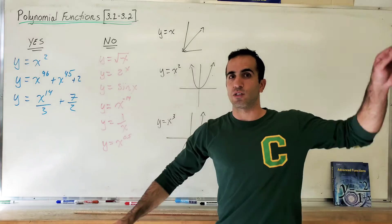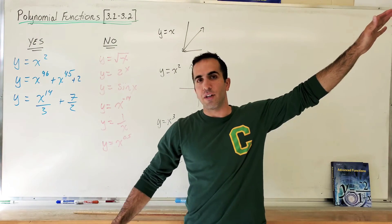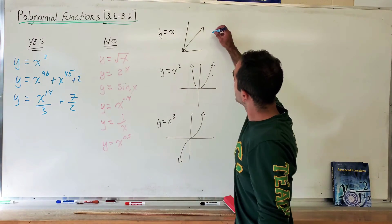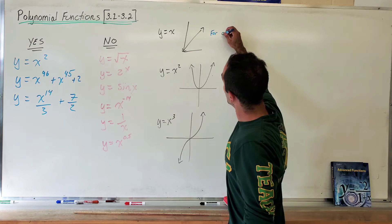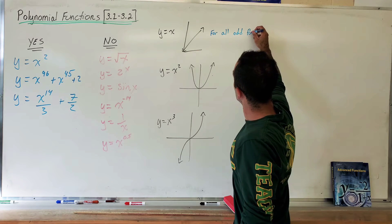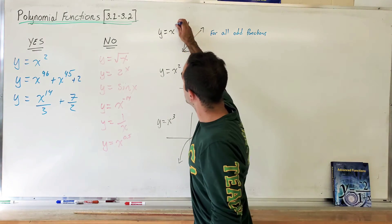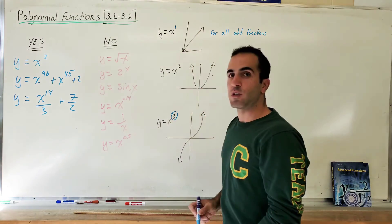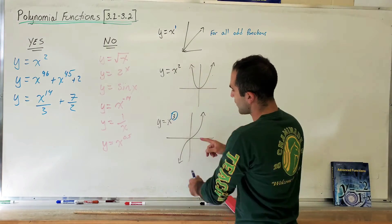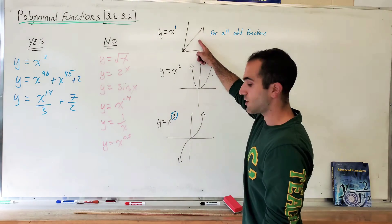So y equals x looks like this. Look at the end behavior. The end behavior is going down to infinity this way and up to infinity this way. Now what I'm going to say is, this is true for all odd functions. Now I'm not talking symmetry. I'm talking to the exponent 1, to the exponent 3. Look at the behaviors at the end. They're the same. They're just some stuff happening in the middle that we don't care about right now. But this and this looks the same.